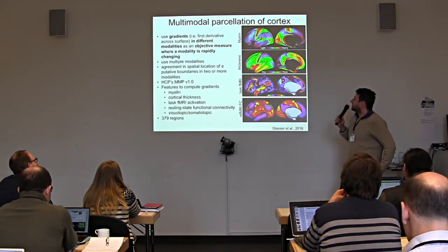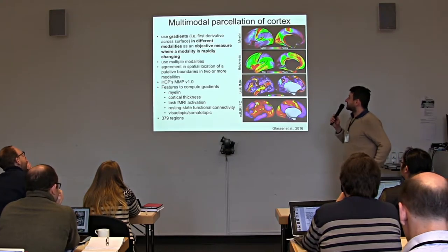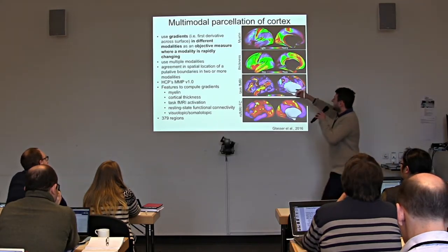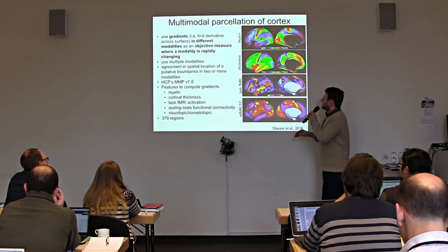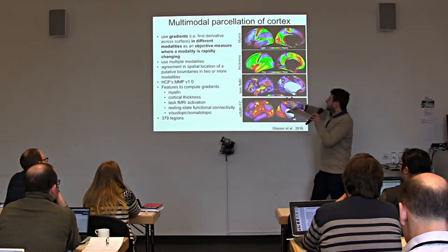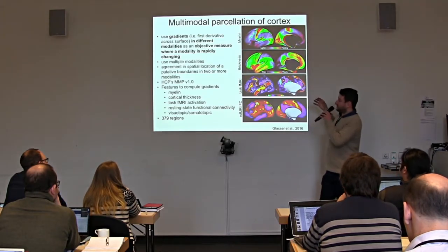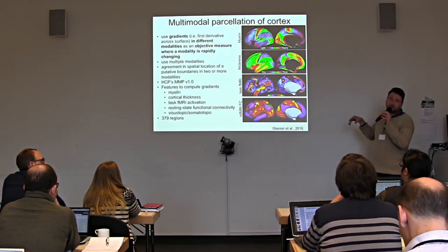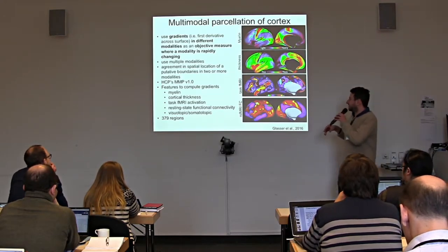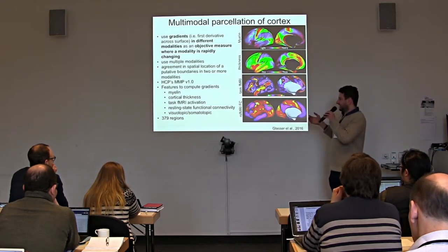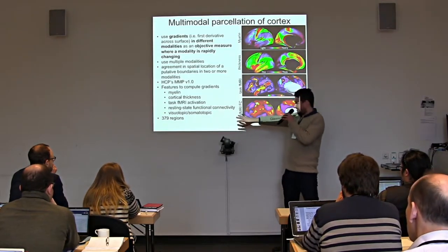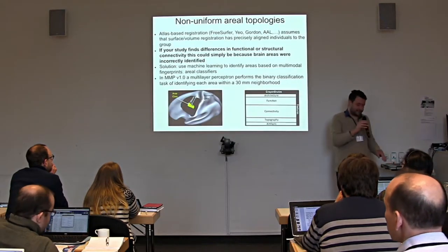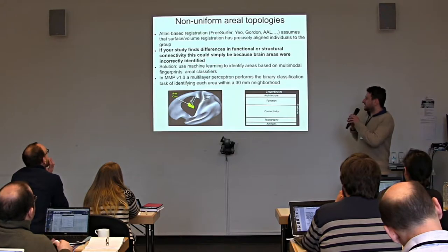The way MSMAll does this is by using gradients — the spatial derivative, the change of one of these features across different modalities. Here we have a large change at a gradient. When we find a gradient in more than one modality, this is an indication that underlying this gradient lies a certain functionally distinct region. Combining this with a machine learning classifier yields a parcellation of about 360 plus 19 subcortical regions. We have our gray ordinates, features like myelin and resting-state functional connectivity, and a perceptron with two hidden layers learning two weight matrices to map each gray ordinate to a certain class.